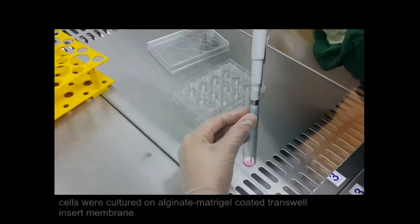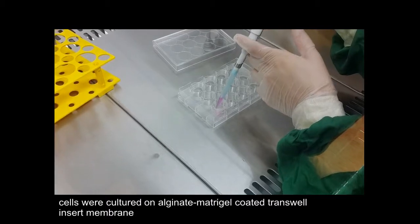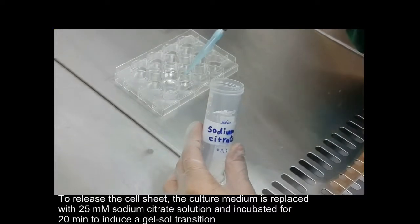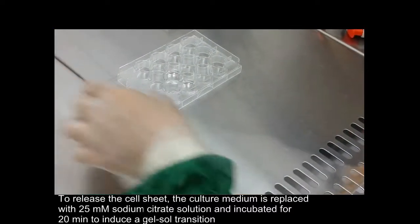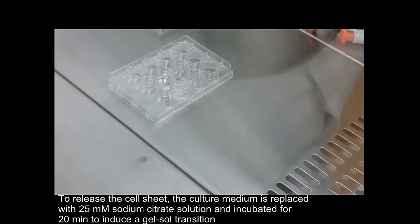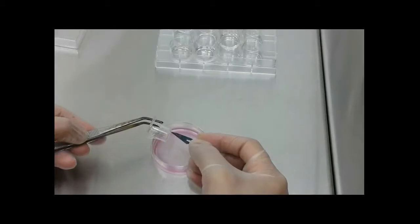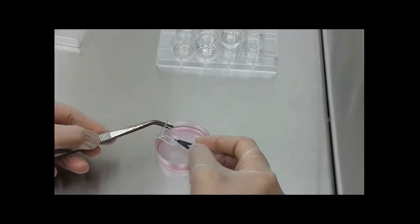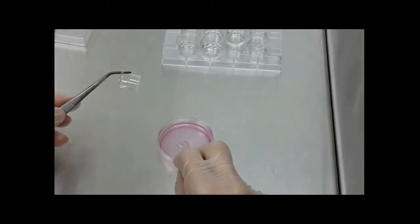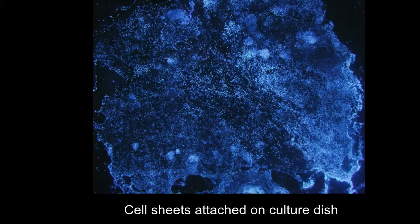Once the cells had grown to confluence, exposing the calcium alginate to the chelating agent citrate as a mild agent, liquefy calcium alginate and cause the release of the consolidated cell sheet without adverse effects on cell viability. Cell sheets were attached to cultured dish and were assessed by nuclear DAPI staining.